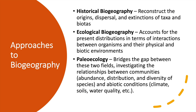Moving on to approaches to biogeography. The first is historical biogeography — based on the name, it focuses on origins and dispersal mechanisms from the past. We tend to reconstruct these events: the origins, dispersal, and extinction of certain biotas. It's exciting because we want to recreate what happened — we want to know where we came from.